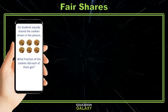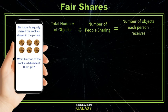Six students equally share the cookies shown in the picture. What fraction of the cookies did each of them get? To calculate this, we divide the total number of objects, six, by the number of people sharing, also six. That gives us the number of cookies each person receives. So we would do six divided by six, and we get one.